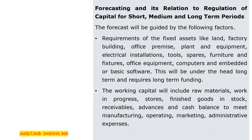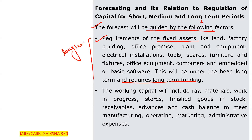Next — forecasting and its relation to the regulation of capital for short, medium, and long-term periods. The forecast will be guided by the following factors. First: the requirement of fixed assets like land, factory building, office premises, plant and equipment, electrical installations, tools, spares, furniture and fixtures, office equipment, computers and embedded office software. These come under capital expenditure and are long-duration, requiring long-term funding.